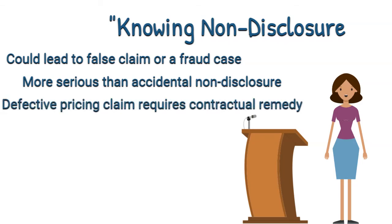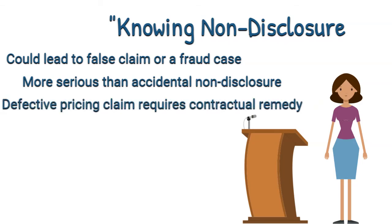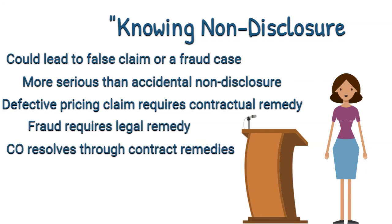Whereas a defective pricing claim requires a contractual remedy, a fraud claim requires a legal remedy. Contracting officers are empowered to resolve and disposition defective pricing findings through application of contract remedies, but are not empowered to represent the government in assertions of fraud.